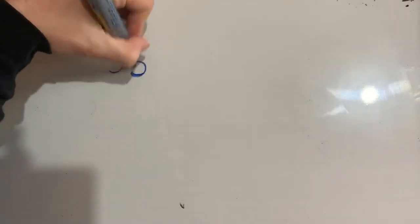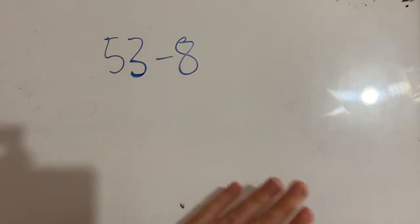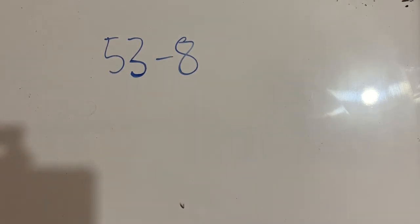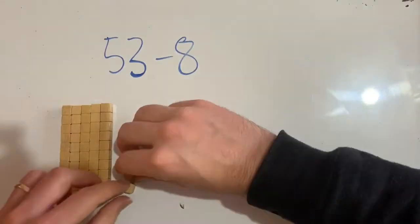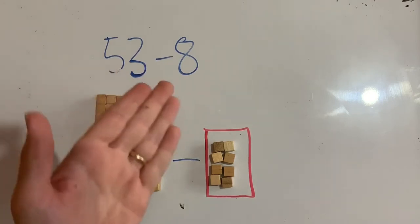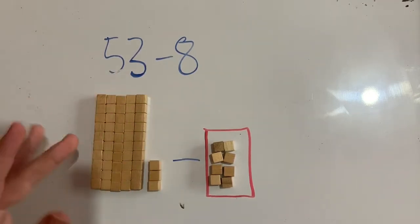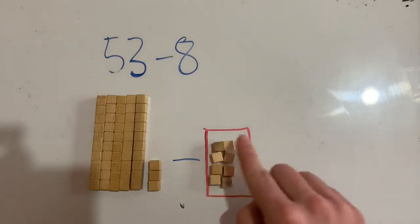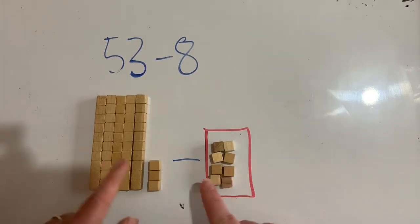Let's say we have 53 minus 8. We could count backwards, but things do get a little tricky when we're no longer in the 50s and we have to go down to the 40s. What we can do is break this 8 into two parts. I have got 53 minus 8, and I've got 53 represented with MAB blocks—5 groups of 10 and 3 units—and I need to take away these in the red box. I could count 8 of them and get rid of them, but it's going to be easier in my mind if I break this 8 into smaller bits.